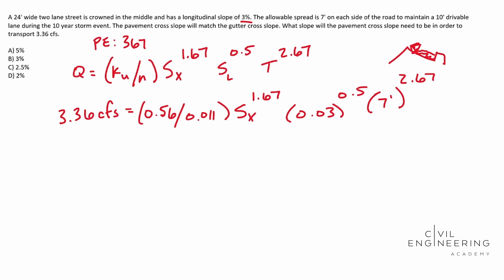So really you'll notice that we only have one unknown here and all we have to do is solve for S X. Okay. So now all we have to do is simplify. So 3.36 cubic feet per second, and we're going to put that over our 0.56 over 0.011.